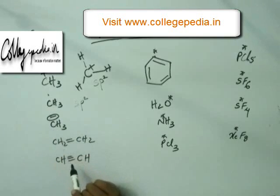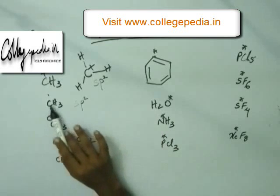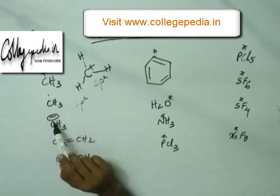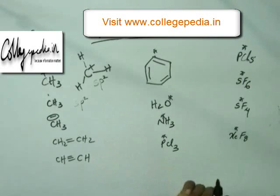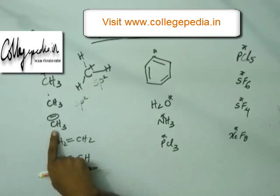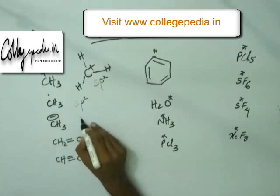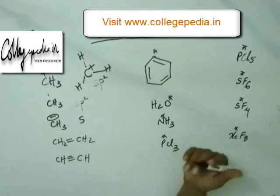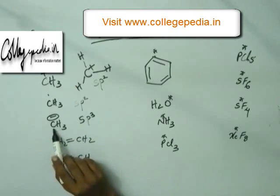For methyl anion, look for sigma bonds, negative charge, and lone pairs. There are 3 sigma bonds with hydrogen and one negative charge. The orbital carrying the negative charge must be hybridized to offer more room to those two electrons and reduce inter-electronic repulsion. So we require 4 hybridized orbitals - 3 for sigma bonds and 1 for the negative charge. Mixing 4 pure orbitals: one S and three P gives sp3. The hybridization state of carbon in methyl anion is sp3.